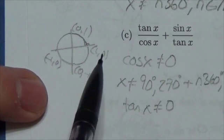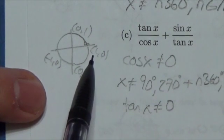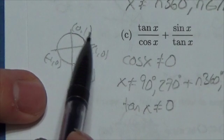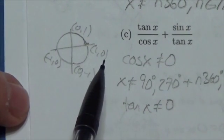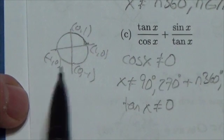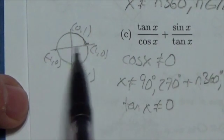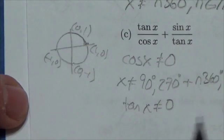Remember, tangent is just sine divided by cosine, or y divided by x. So as you go around the circle here, where does the y coordinate divided by the x coordinate produce a zero? That's going to be at zero degrees and 180.